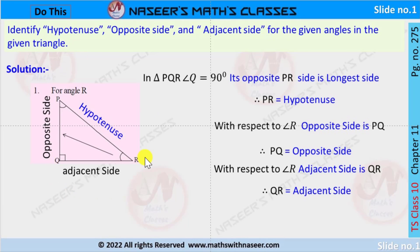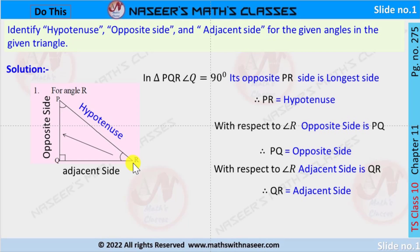Here triangle PQR is given in which angle Q is equal to 90 degrees. Its opposite side PR is the longest side, therefore PR is the hypotenuse. With respect to angle R, the opposite side is PQ.